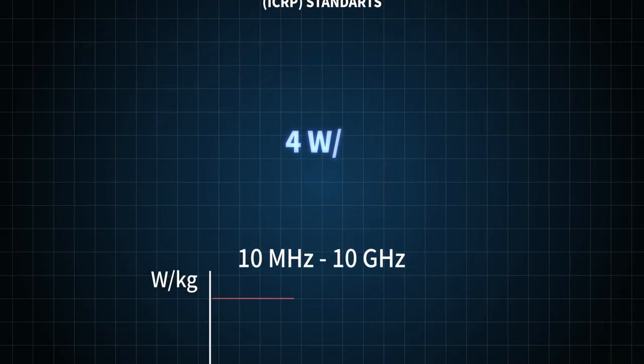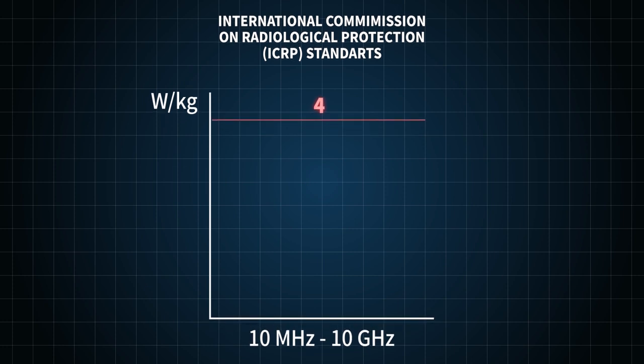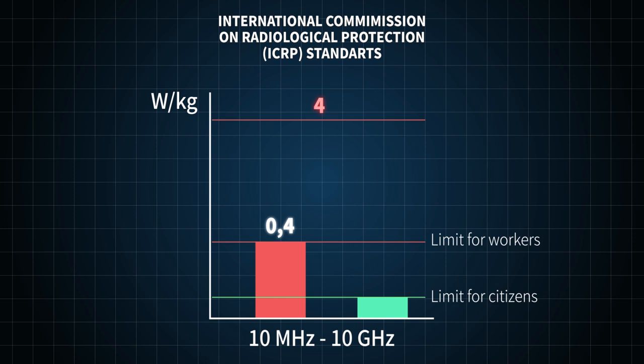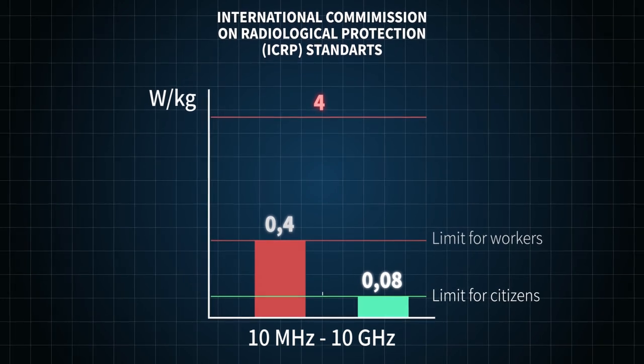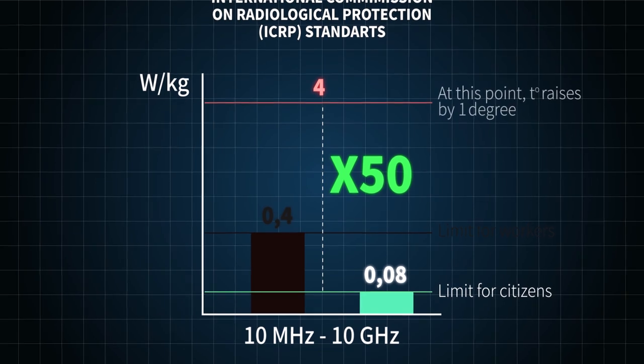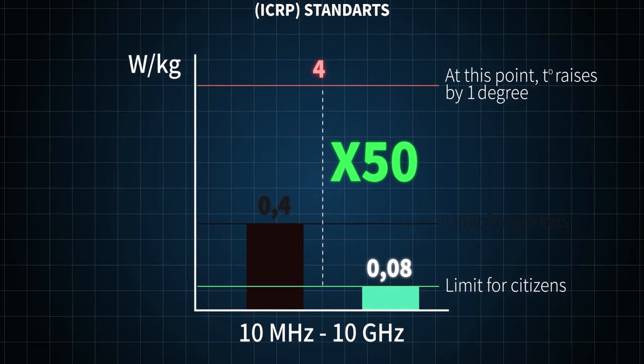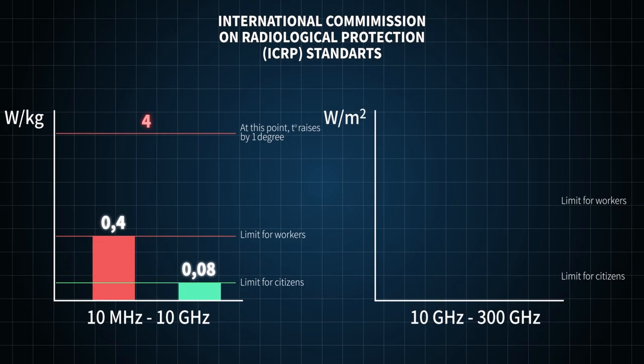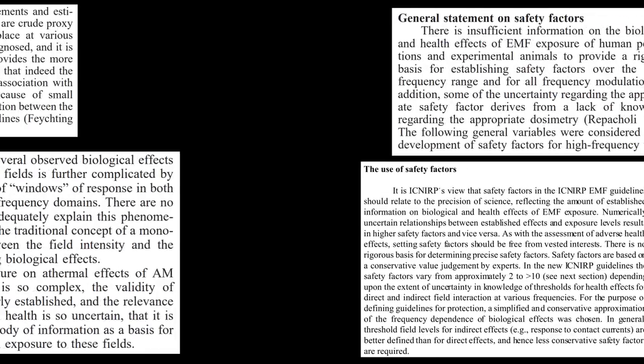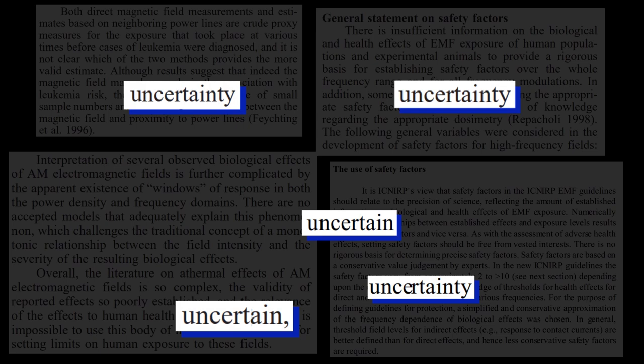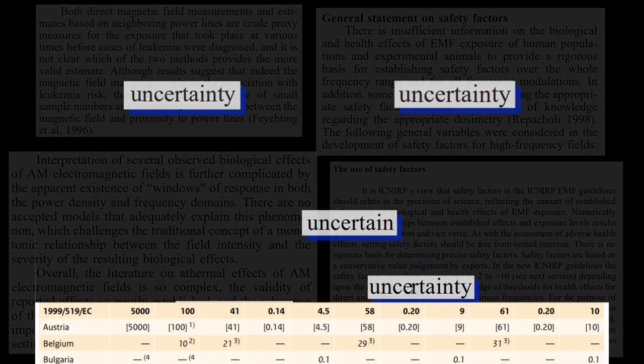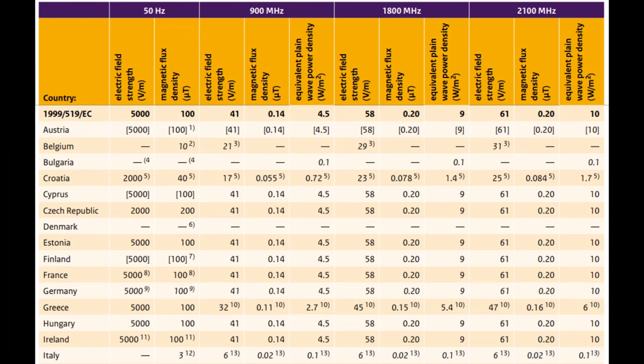People know that the world of radio emissions has its secrets, so the commission lowered this rate by 10 times to 0.4 watts per kilogram, and then they divided it by five for security purposes in public spaces. Thus radio emissions should not exceed 0.08 watts per kilogram of weight. This is 50 times less than the density at which the body temperature rises by one degree. For higher frequencies they recommend not exceeding 10 watts per square meter.